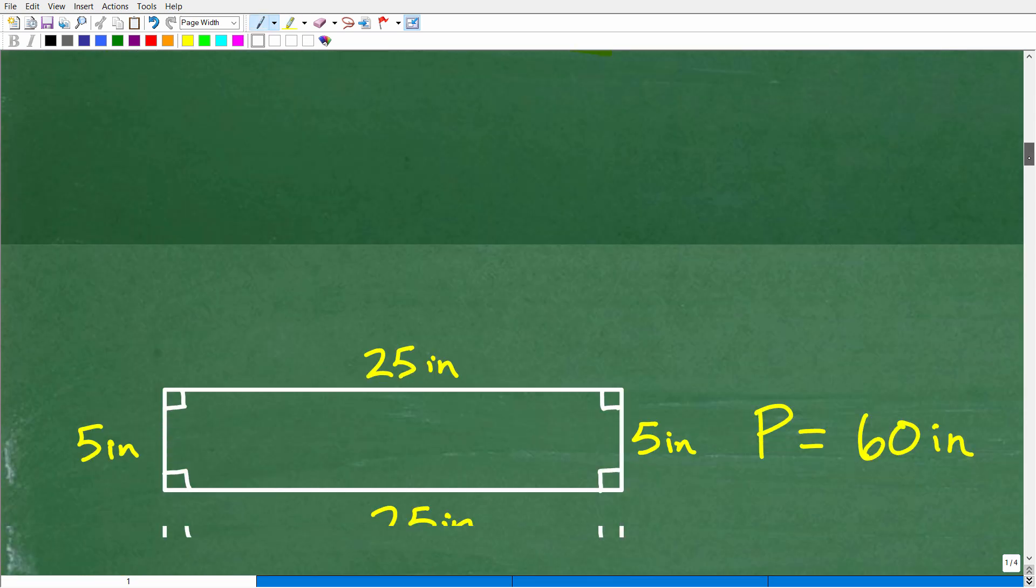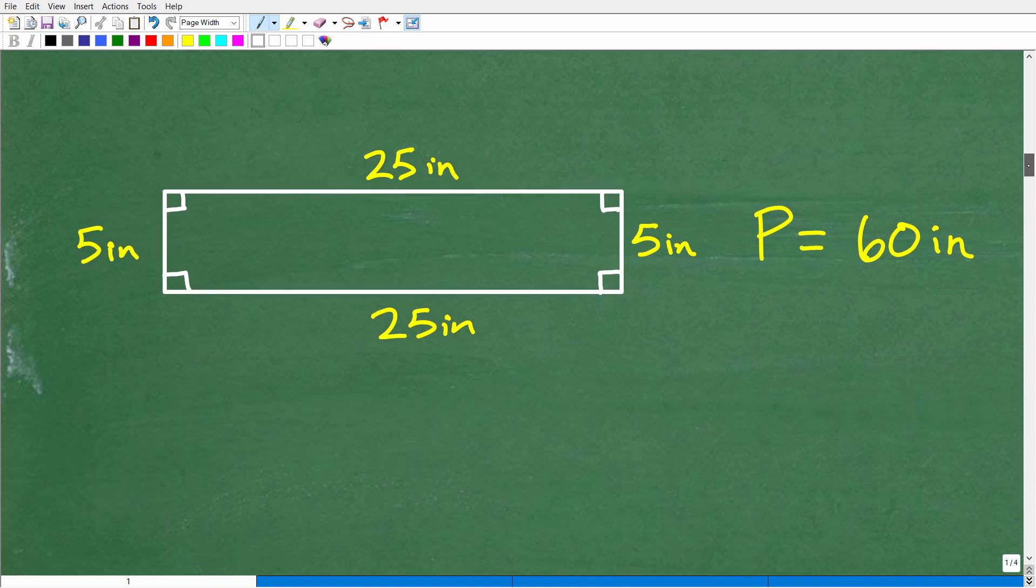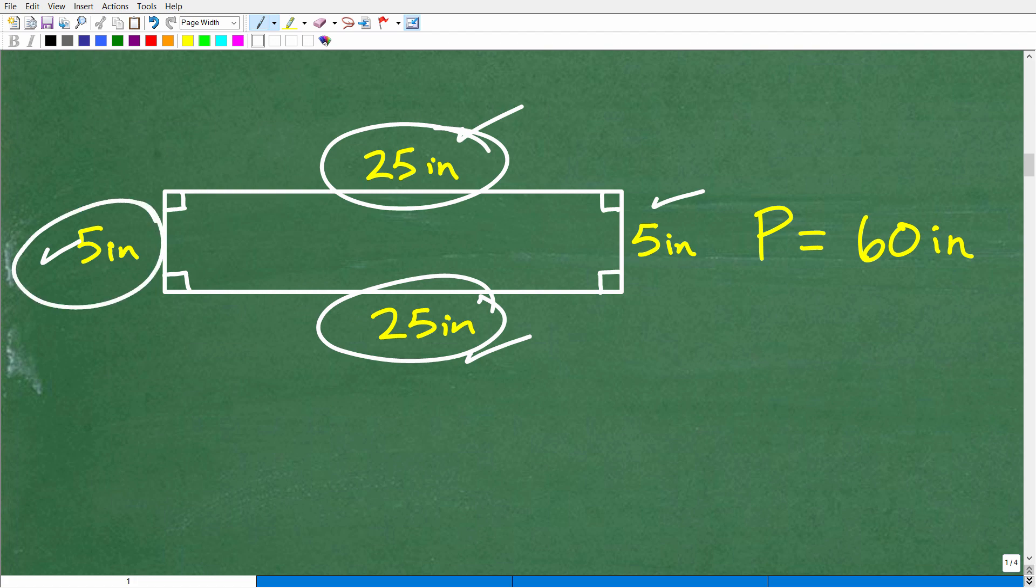Let me see. Did I draw this little figure? Yeah, I did. See, I always do this work in advance. So our final dimensions will be 25 by 5. So 5 inches, 5 inches, and 25 inches, 25 inches. You can see if we add these up, just to check, 25 and 25 is 50. That's 55. That's 60. That adds up to 60. That is the perimeter.